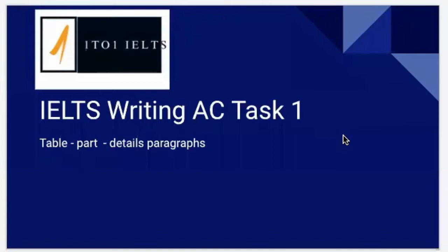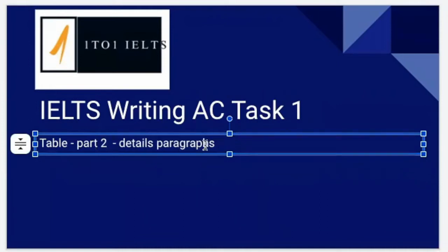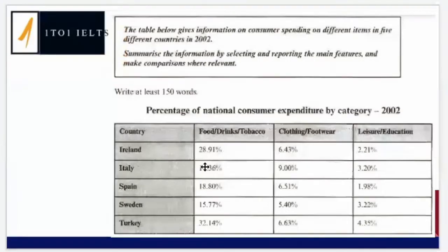Welcome everyone to today's lesson. We're looking at IELTS Writing Task 1 for the academic exam. Today we have a table that we're going to look at. We're focusing on the details paragraphs — this is the second part of the lesson from last week. The question said: the table gives information on consumer spending on different items in five different countries in 2002. Summarize information by selecting and reporting main features and make comparisons where relevant.